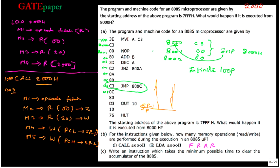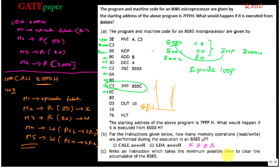So CALL requires a total of five machine cycles to execute — that means five memory operations: one opcode fetch, two memory reads to get the address, and two memory writes to push the program counter onto the stack. For LDA it requires four memory operations. So the answer is: CALL = 5 memory operations and LDA = 4 memory operations.